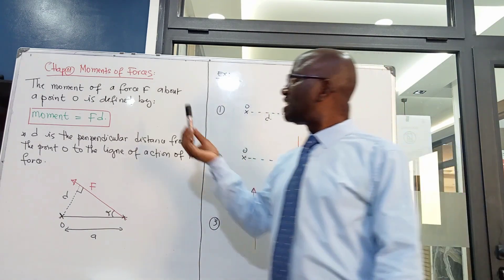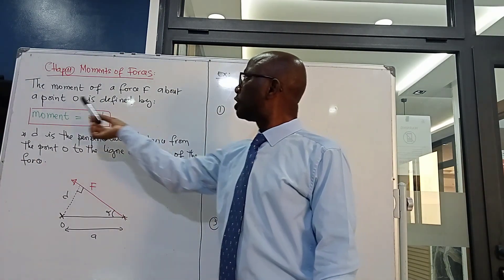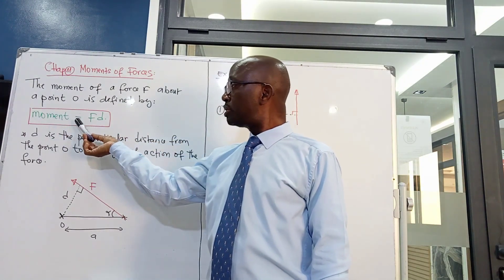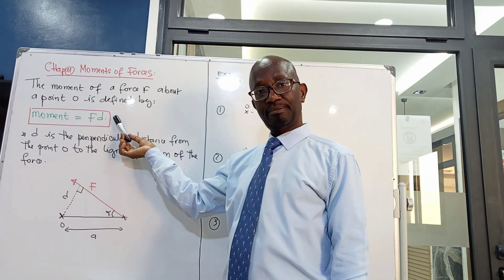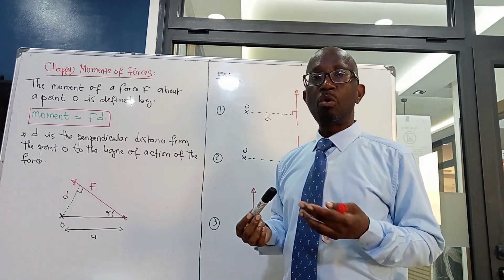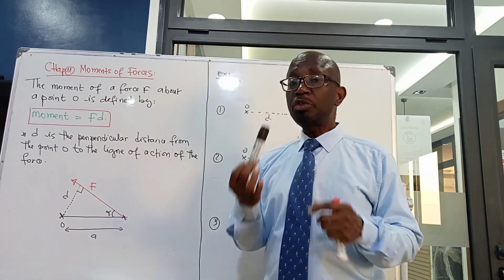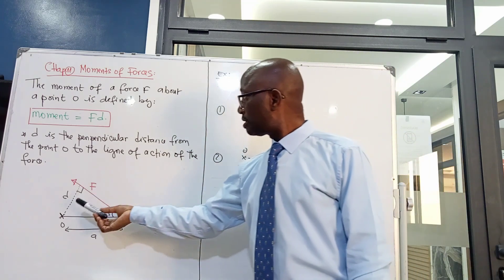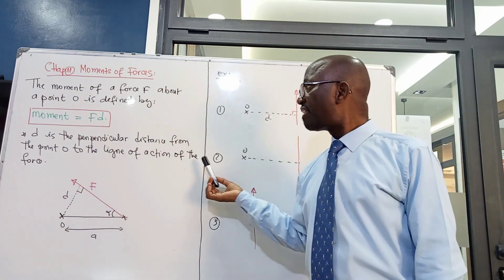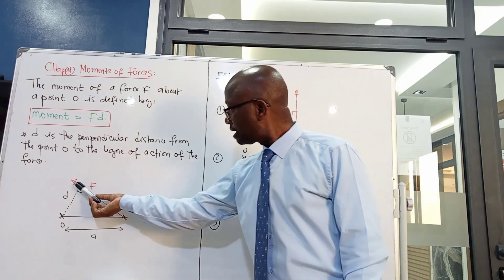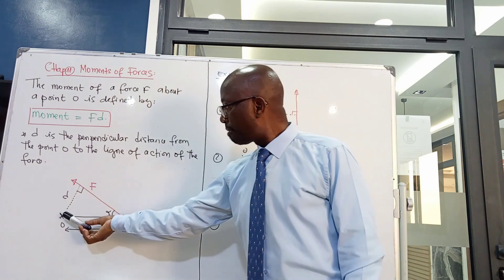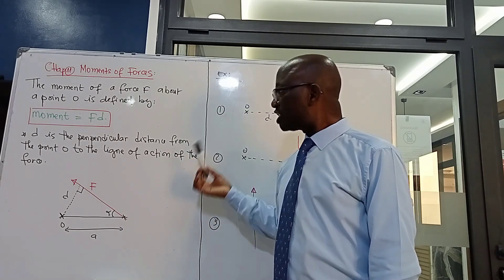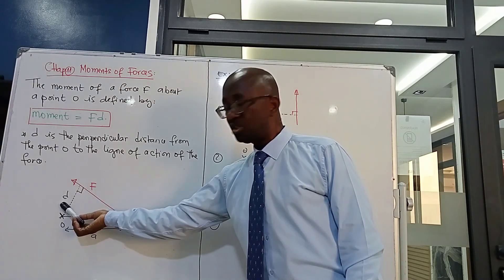Let's start with the definition. The moment of force F about a point O is defined as: moment equals the force times D. The value of D is the perpendicular distance from point O to the line of action of the force. Here we see the line of action of the force, and the distance from that line to point O is D.